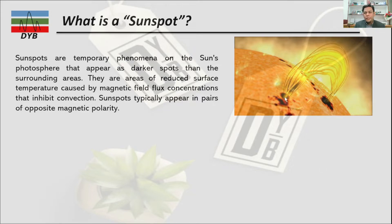A sunspot is actually a temporary phenomenon on the sun's photosphere. If you want to understand the photosphere or the atmosphere of the sun, you can refer to my previous lecture. These activities are held in the photosphere and they appear as darker spots than the surrounding area.